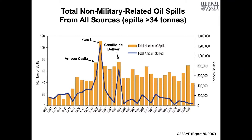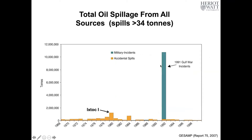If we were to include on this same graph the volume of oil released from one military-related spillage — in this case from the Gulf War — you'll see from this next slide that this spill dwarfs all the others in terms of the volume of oil released into the Persian Gulf. And that was not an accidental spill. That was an intentional, deliberate spill.